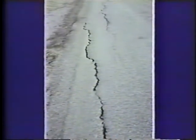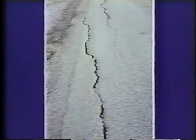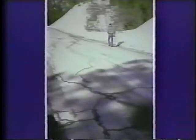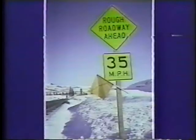Frost heaving in pavements may be relatively uniform and may appear in the form of longitudinal cracks near the pavement edge, or as heaves and cracks following the flow of groundwater, which result in traffic signs like this.